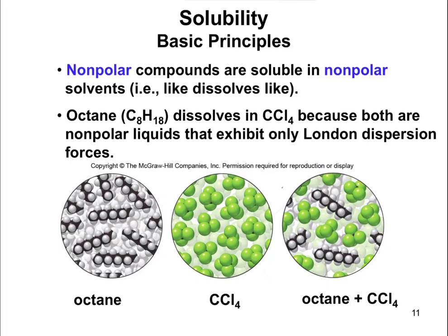Nonpolar compounds are going to be soluble in nonpolar solvents — still like dissolves like, except now the solvent is going to be different. Octane, a component of gasoline, only has carbons and hydrogens. Any time you only have carbons and hydrogens, all your bonds are going to be carbon-hydrogen or carbon-carbon bonds, both of which are nonpolar. So octane is a nonpolar molecule, meaning it's going to be soluble in nonpolar solvents. The example is CCl4 — carbon in the middle with four chlorines. The carbon-chlorine bond is actually polar, but because there are four of them pulling in equal and opposite directions, the overall molecule is nonpolar. So octane is nonpolar, CCl4 is nonpolar, and that means they're going to be able to form a solution — octane is soluble in CCl4.